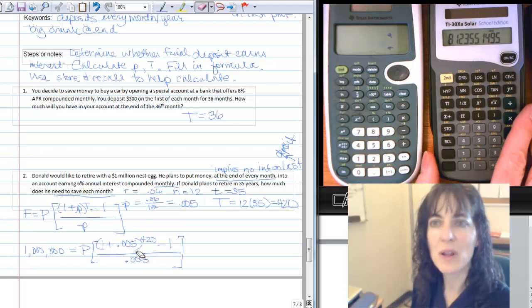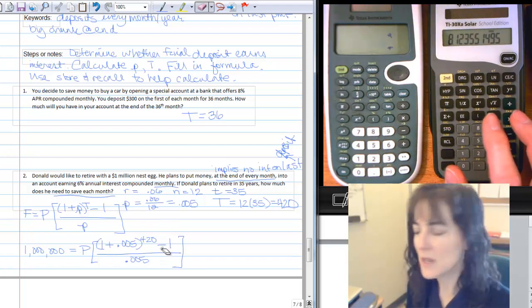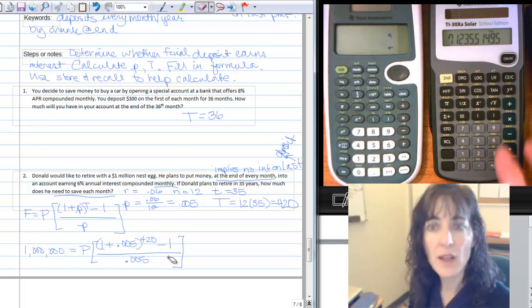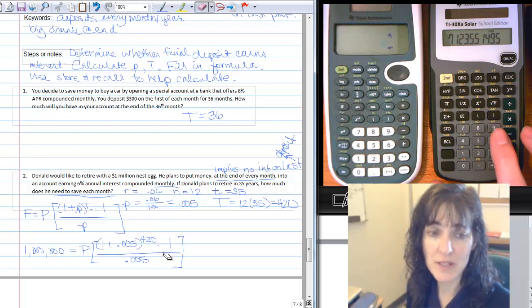It is 8 point, 8.12355, etc. Subtract the 1, that's the next thing, so subtract 1, and I get 7.12355, etc.